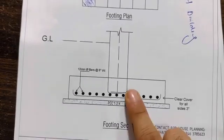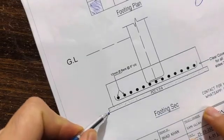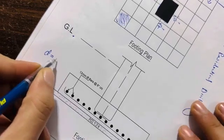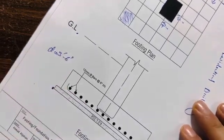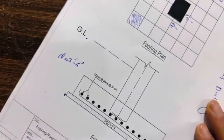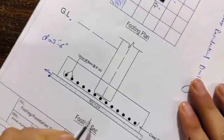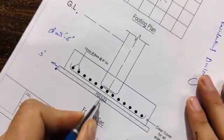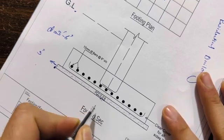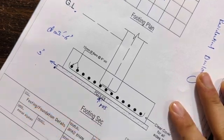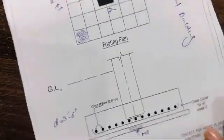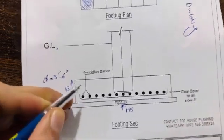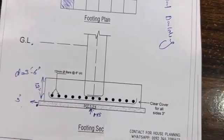This is the section from the foundation to the ground level. The total depth is 3 feet and 6 inches — this is the depth of the footing. Before starting steel reinforcement, we did PCC with a thickness of 3 inches, with a ratio of 1:4, which is M15 grade concrete. The bit depth is 12 inches after the 3 inches of PCC.